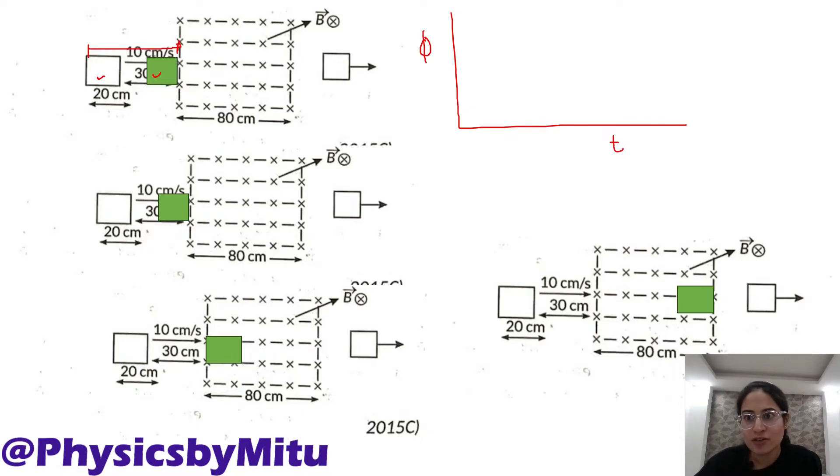So flux will be 0 when it reaches from this point to this point. Kitna time laga to reach from this point to this point? This side covers 30 cm to reach this point, and speed is 10 cm per second. Time kitna laga? Time is distance upon speed, 30 upon 10, 3 seconds. So till 3 seconds, there is no flux induced.